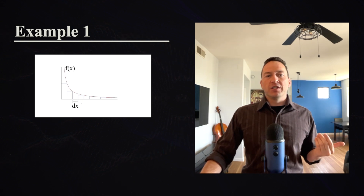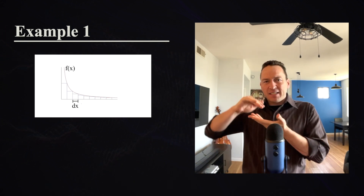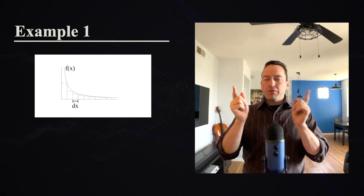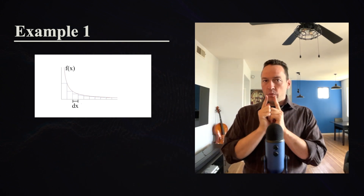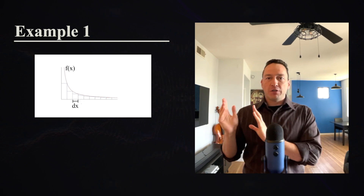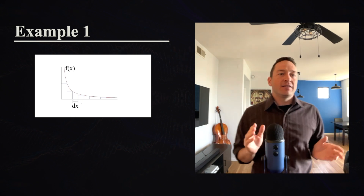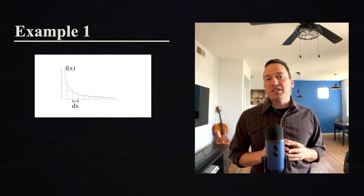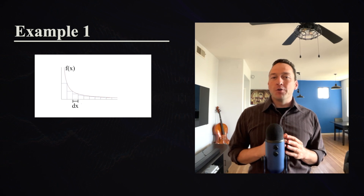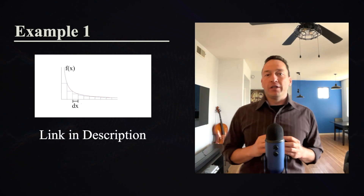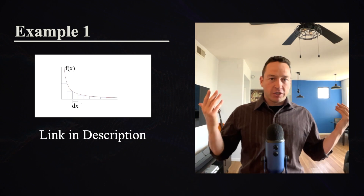To understand that, let's first remember how a one-dimensional integral works. With a regular one-dimensional integral, you're adding up lots of little pieces, each of which has a certain height given by the function, and each piece has a super small width of dx. Adding all these pieces together gives you an area. It turns out that finding that area is the same as taking the antiderivative. If you don't know why that is, I've linked to a video that explains it.